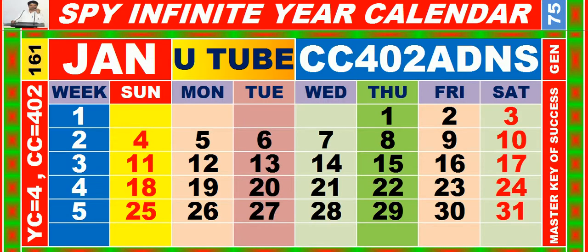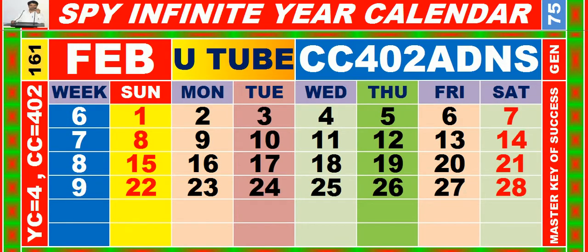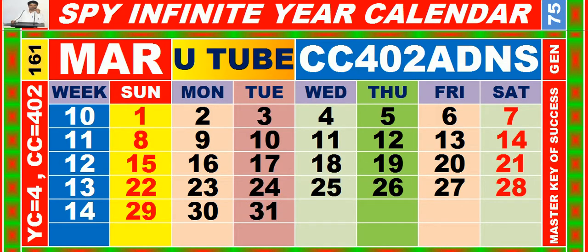Calendar for the month of January, having calendar code equal to 402. Calendar for the month of February, having calendar code equal to 402. Calendar for the month of March, having calendar code equal to 402.